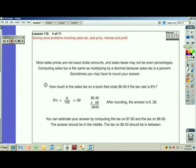Most sales prices are not exact dollar amounts and sales taxes may not even be percentages. Computing sales tax is the same as multiplying by a decimal because sales tax is a percent. Sometimes you may have to round your answer. How much is the sales tax on a book that costs $6.40 if the tax rate is 6%? So 6% is six hundredths, .06. 6.40 times .06 gives you .3840. You're going to have to round that off. You're going to round it to 38 cents.